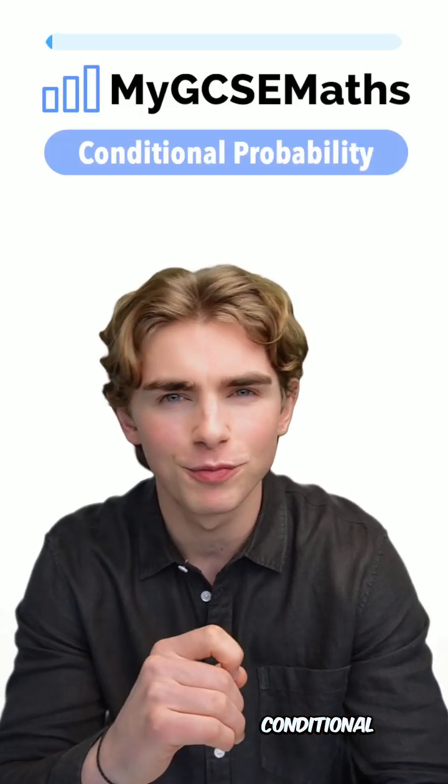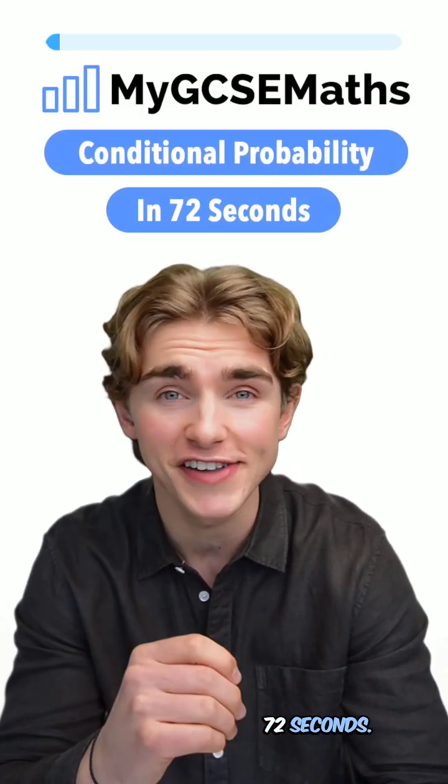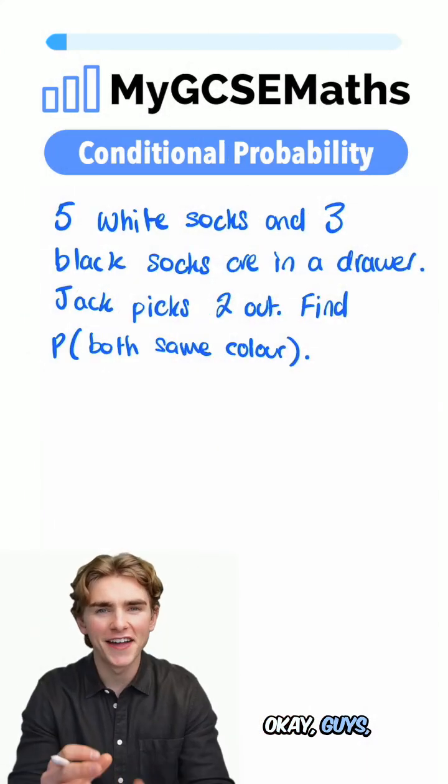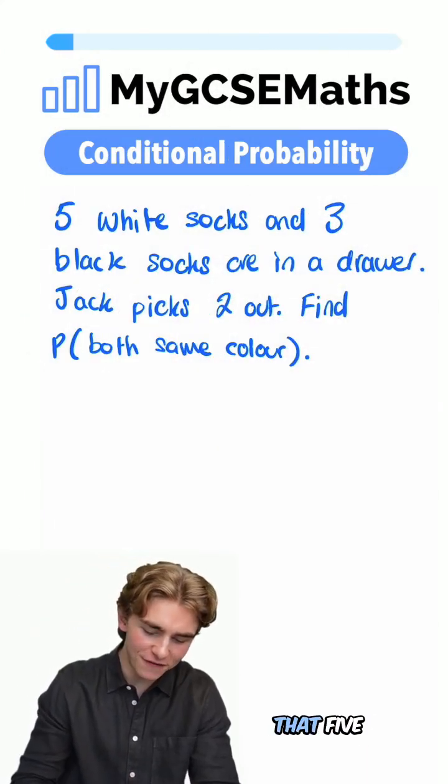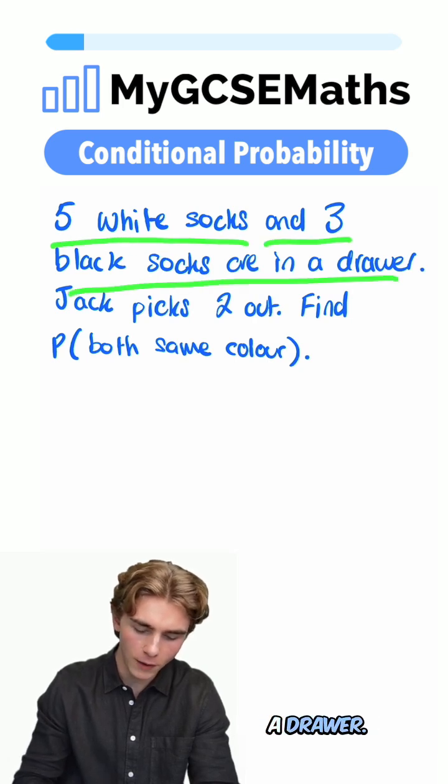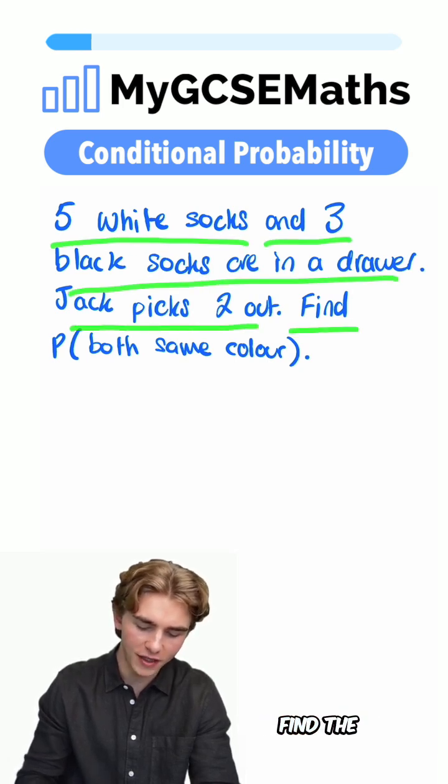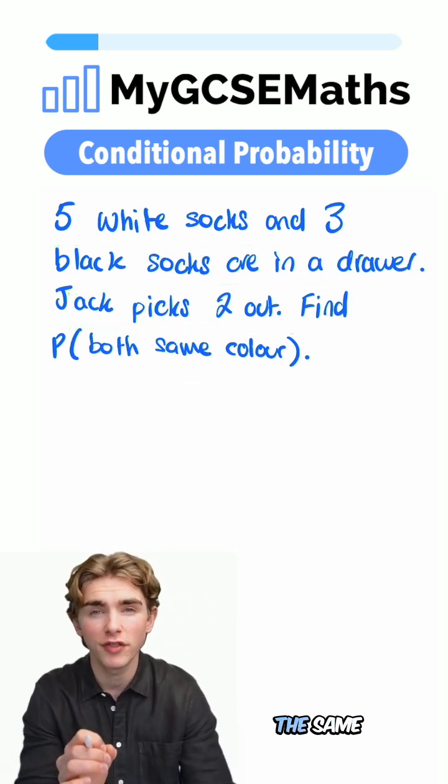GCSE maths tricky conditional probability question in 72 seconds. Let's go. Okay guys, let's have a look at this. Five white socks and three black socks are in a drawer. Jack picks two out, find the probability that they are both the same color.